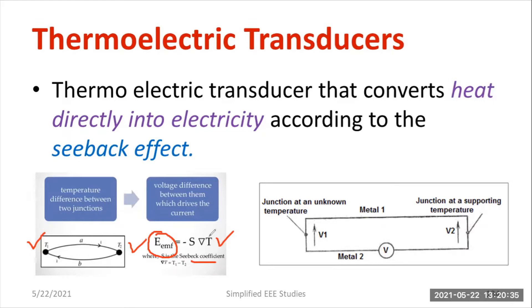S is known as the Seebeck coefficient. I will let you know the values of the Seebeck coefficient for different junctions, as the Seebeck coefficient varies with respect to different junction types — like J, T, S, and others. Delta T is nothing but the difference in temperature.